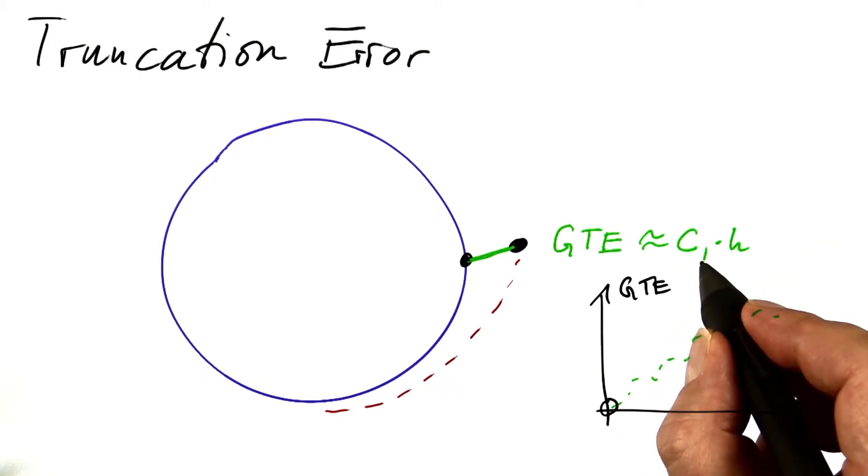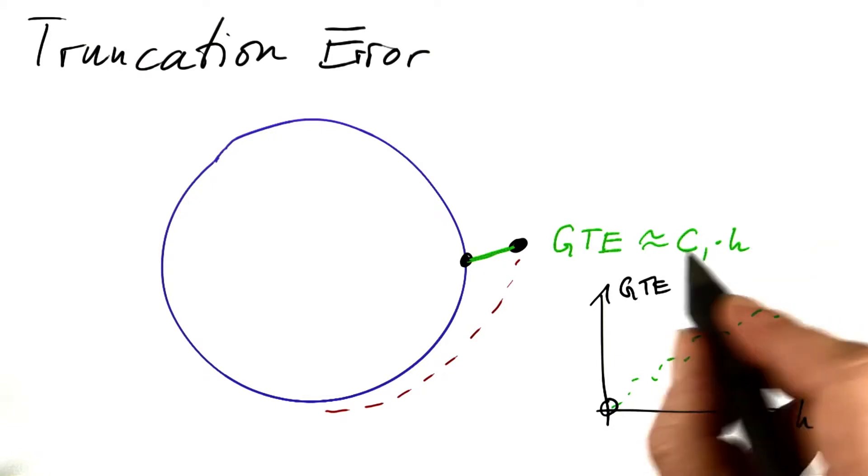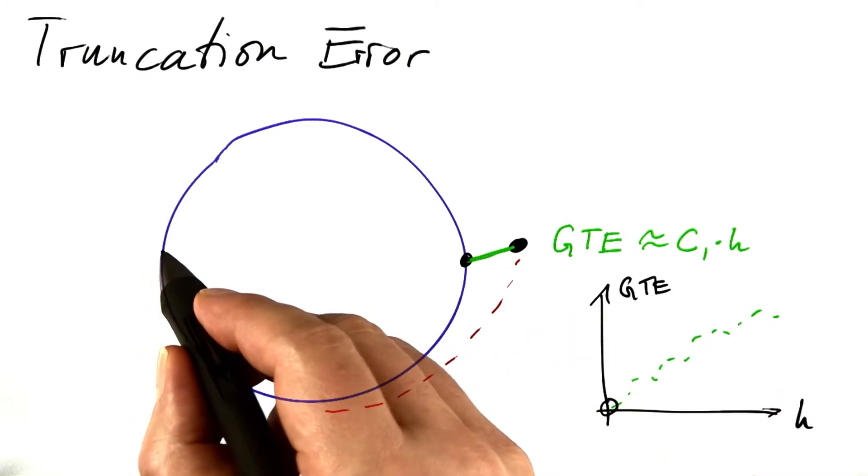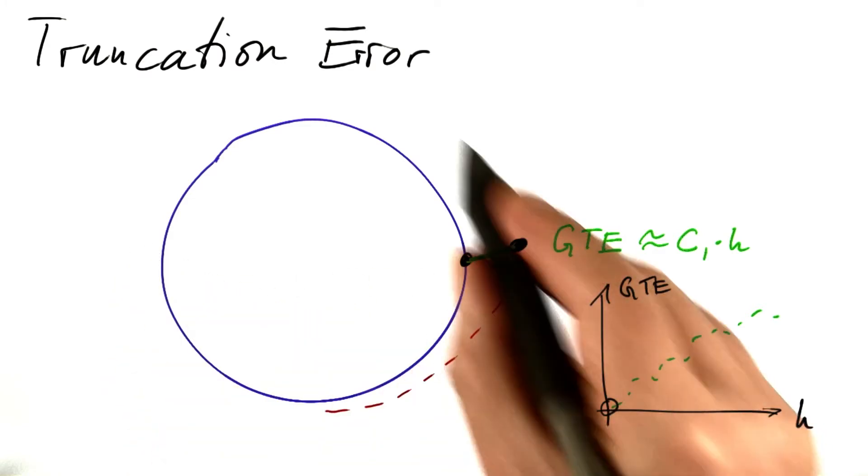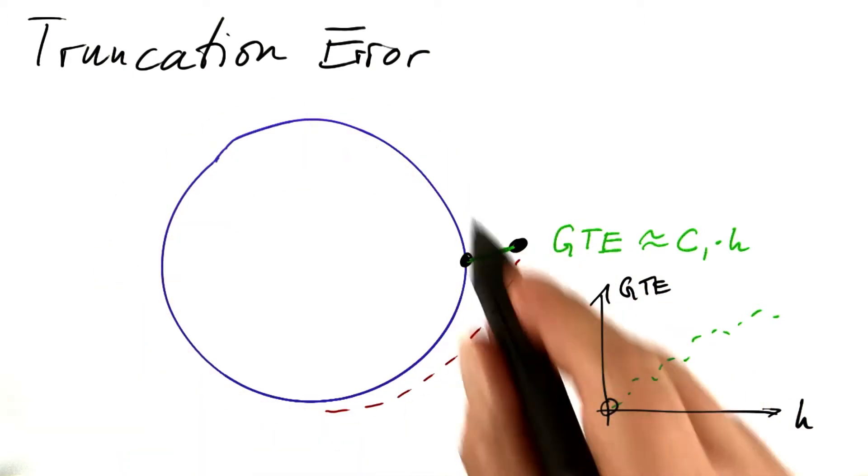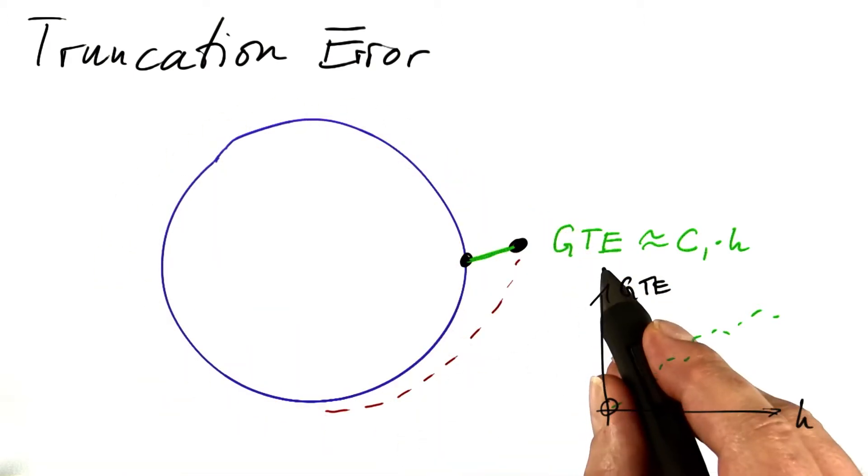And beware, this constant depends on the simulation time. If we look at the global truncation error at this point, it may be smaller. If we take at some further orbital periods, this truncation error may explode.